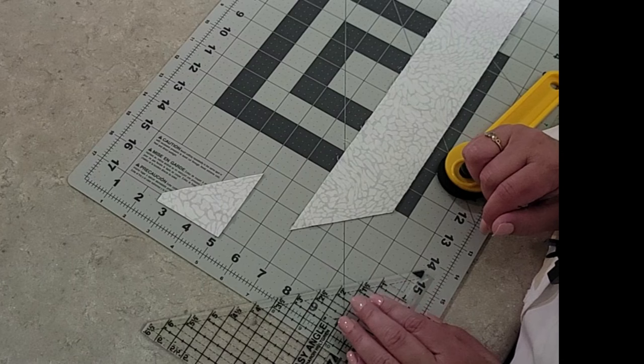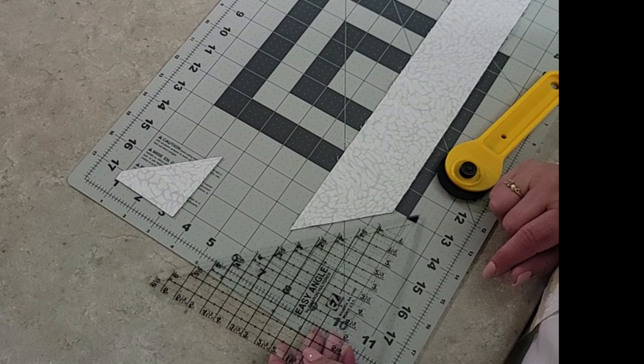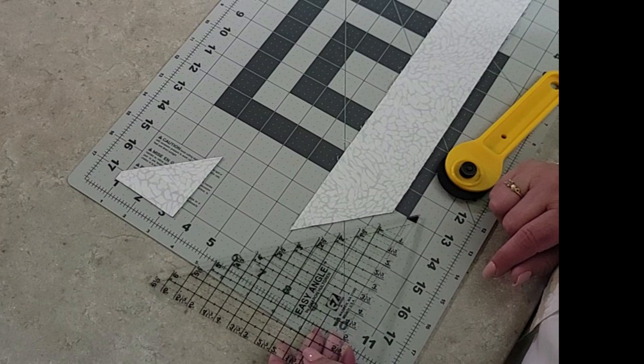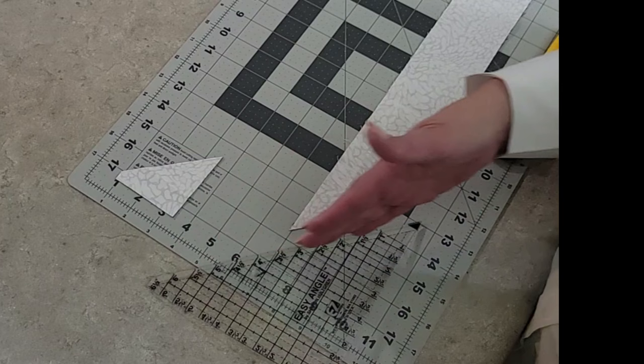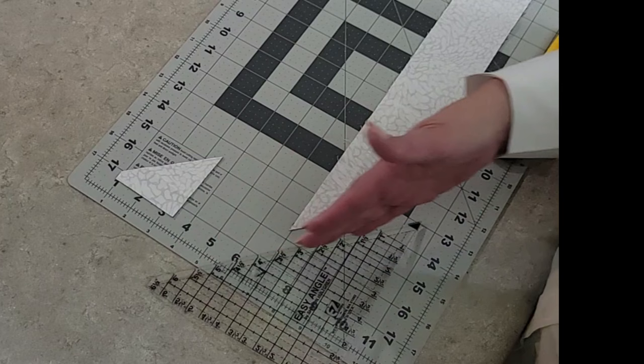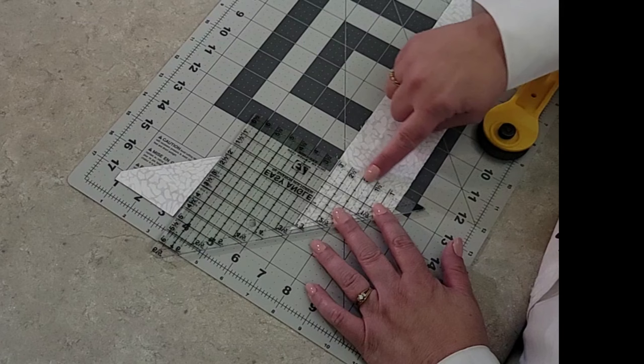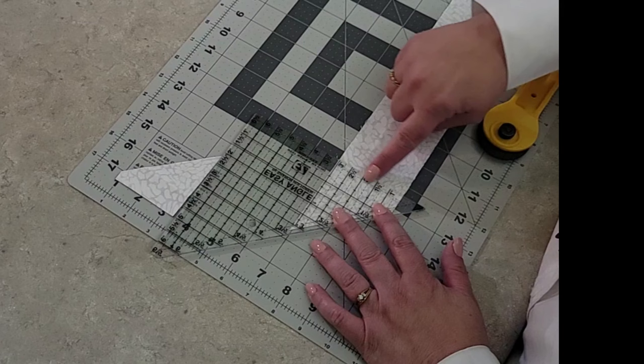Now the next thing we do is take the easy angle and we're going to pivot or flip it. When we flip it, sometimes we'll say we're flipping it like the page of a book, but it's truly along the diagonal edge—just do a flip. The bottom left becomes the top right. If you do that, you will still see the numbers look right side up and right towards you.